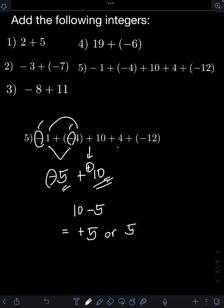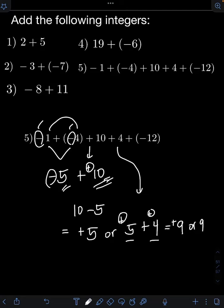And then next, we need to add 4. So this time we are adding like signs again — they are both positive. So 5 plus 4, that will be 9. And then copy the same sign on the final answer, which is positive. So we have positive 9, or simply 9.